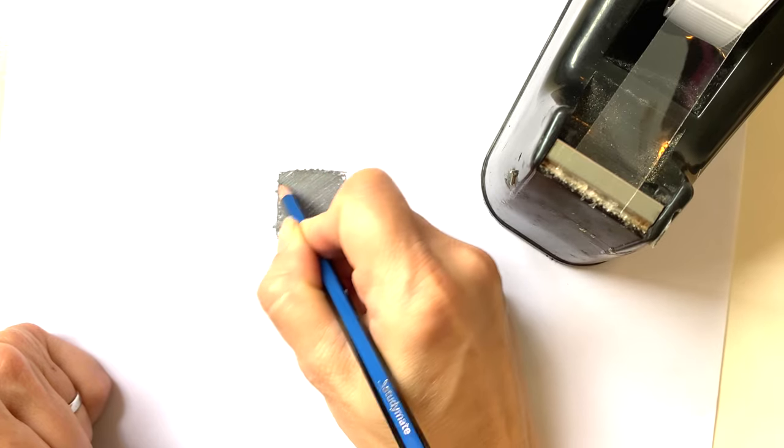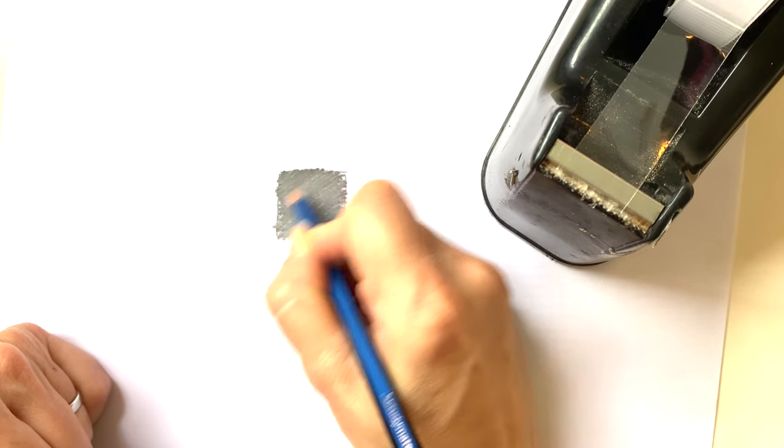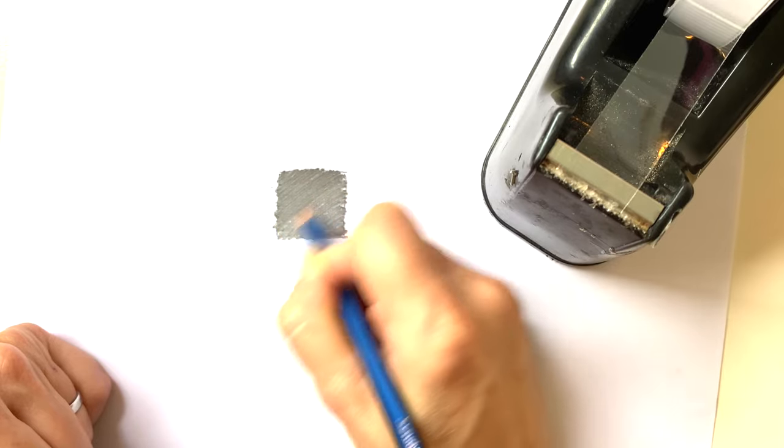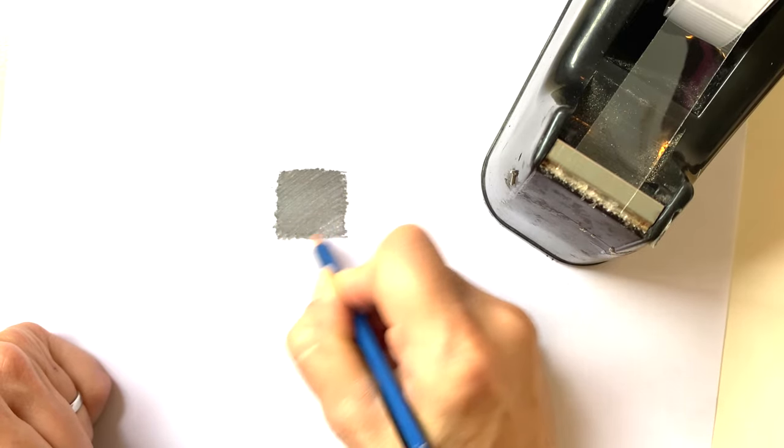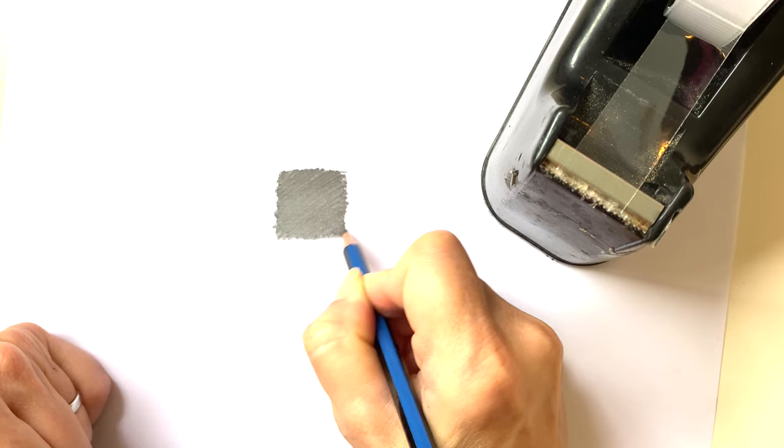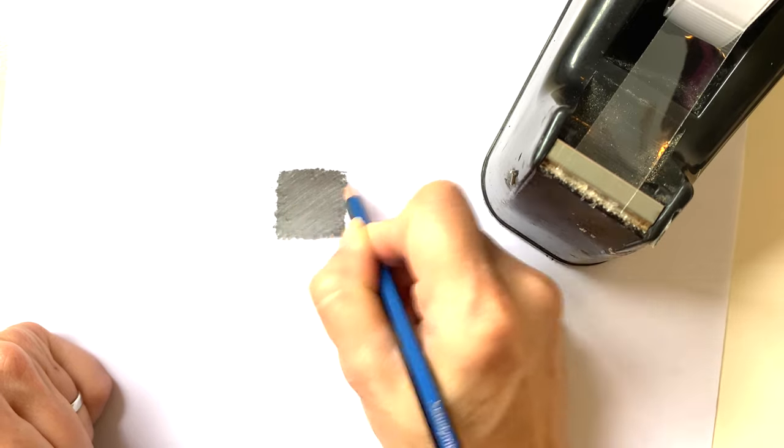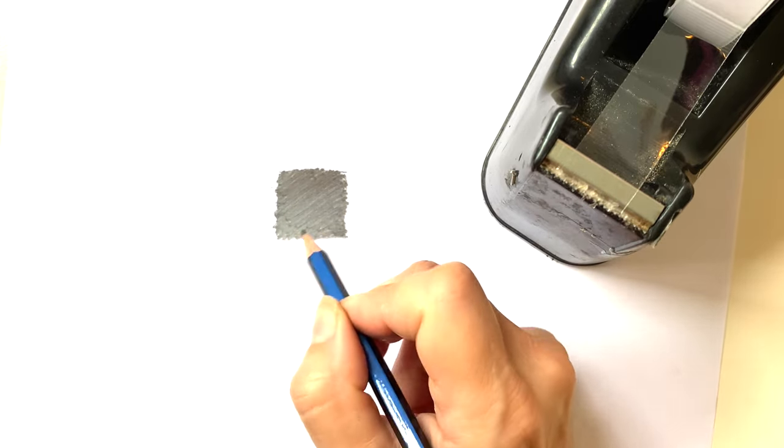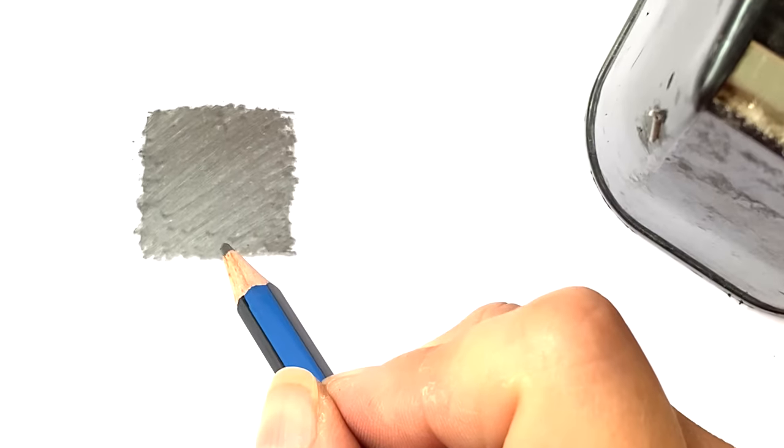Get lots and lots of thickness of the pencil on there. Go backwards and forwards a few times until you get a really good thickness. So you can see how dark I've got that now. The next step is to take your finger and just rub it all over that pencil.